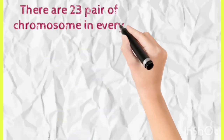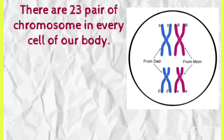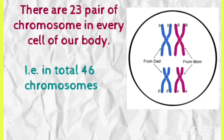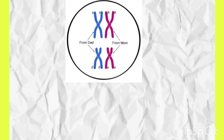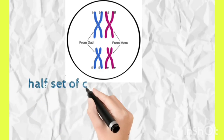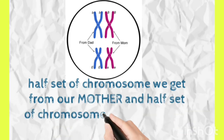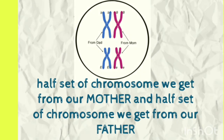Now, in these chromosomes, human beings have 23 pairs of chromosomes — that means 46 chromosomes in total. These 46 chromosomes come from our parents: we get 23 chromosomes from our father and 23 chromosomes from our mother. That means a half set from our mother and a half set from our father.